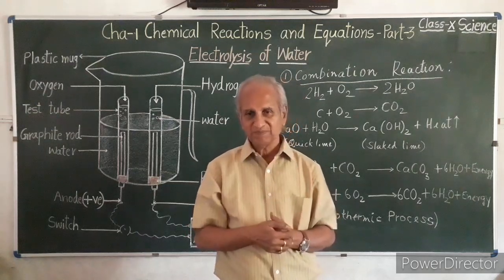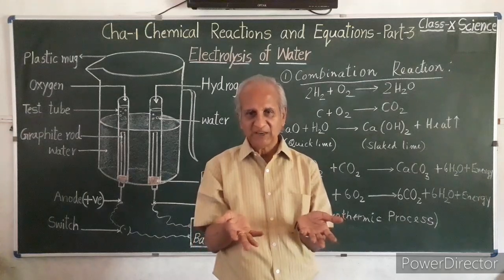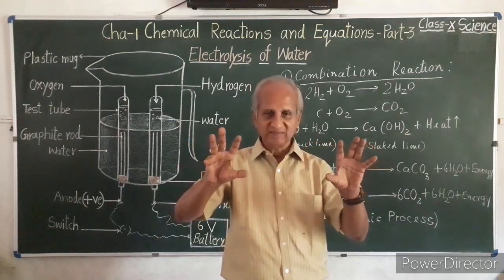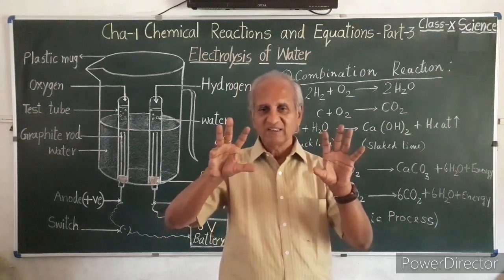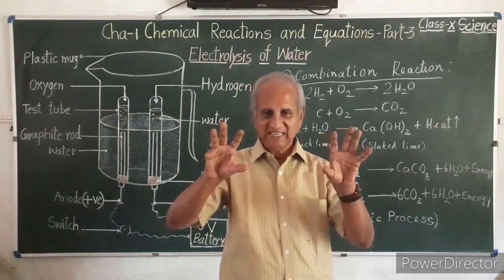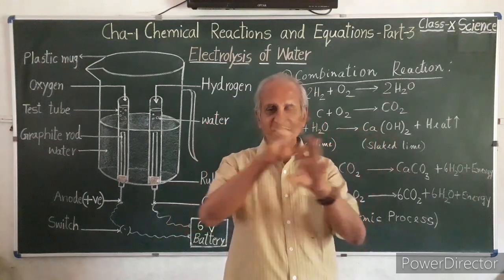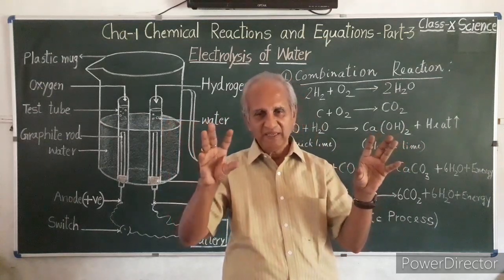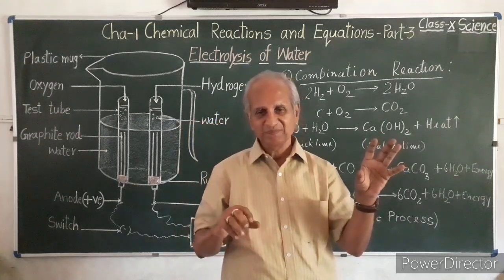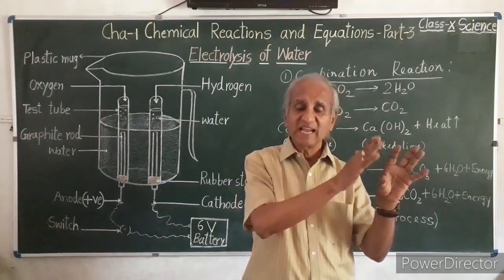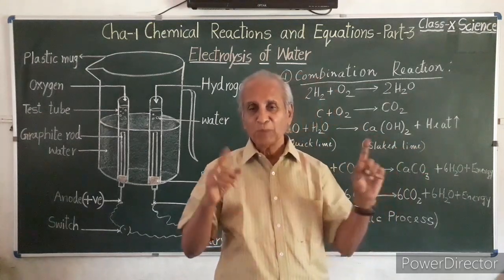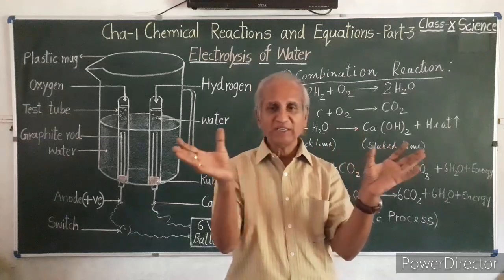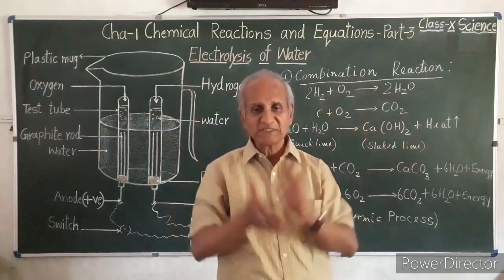Then we have the fourth type. We learnt about chemical decomposition; now double decomposition — two substances come together, say AB and CD symbolically. AB and CD will replace their radicals; they will get their radicals displaced. AB will become AD, and CD will become CB. So B and D got exchanged: AB plus CD, B and D got exchanged and both substances will be new substances now.